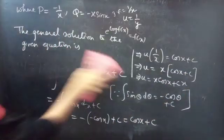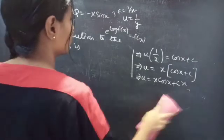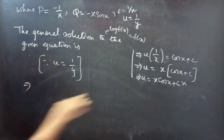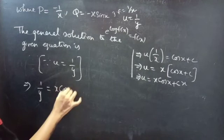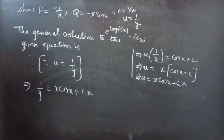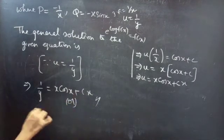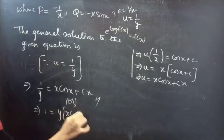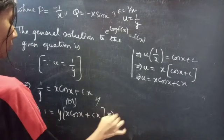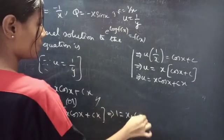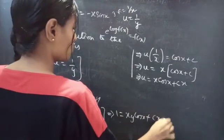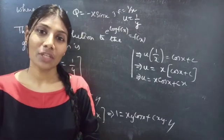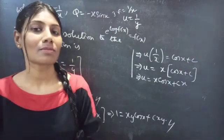Now replacing u with 1/y (since u = 1/y), the equation becomes 1/y = x cos x + cx, which is the required solution. Equivalently, 1 = y(x cos x + cx). This completes the problem. We have solved a Bernoulli's equation problem in this video. Hope you understood. See you in the next video, bye-bye.